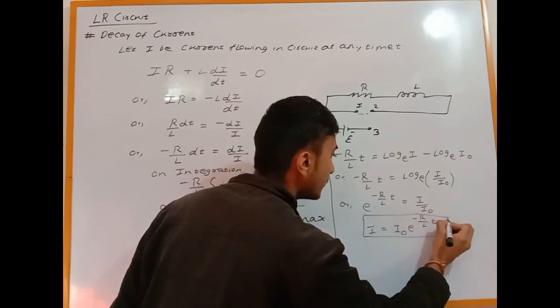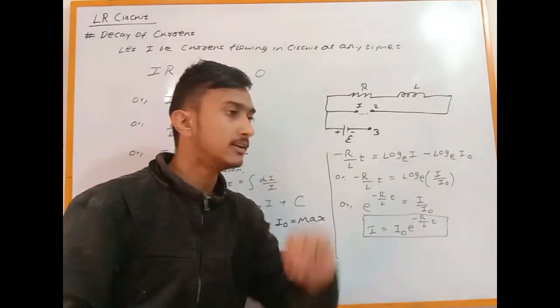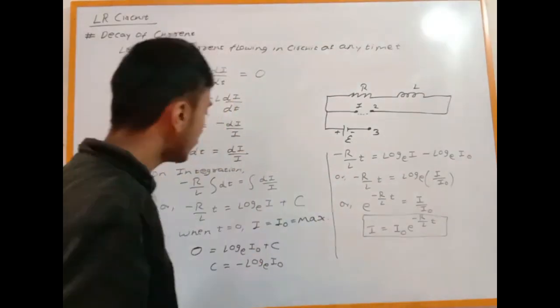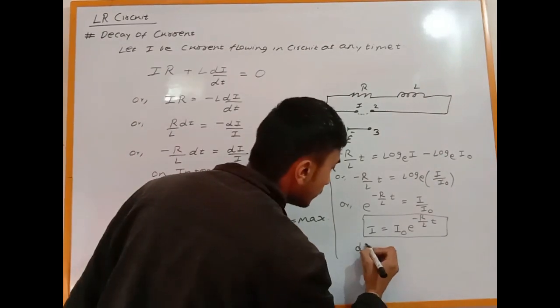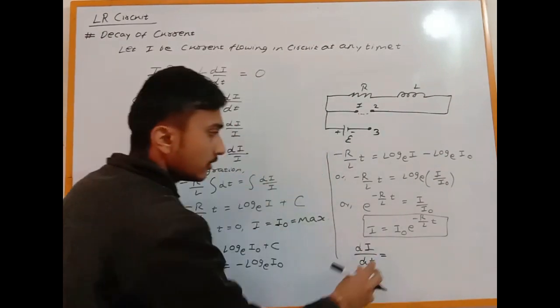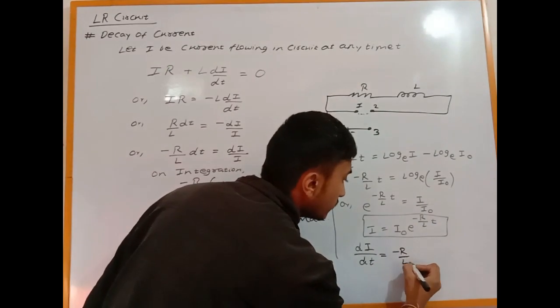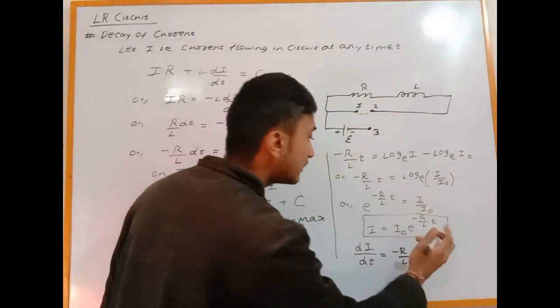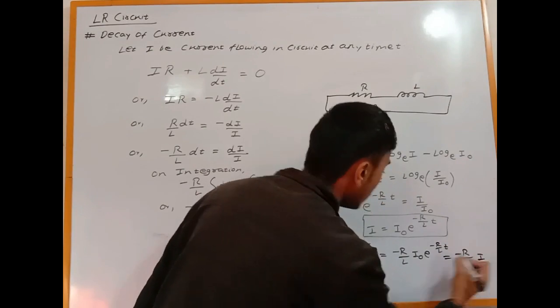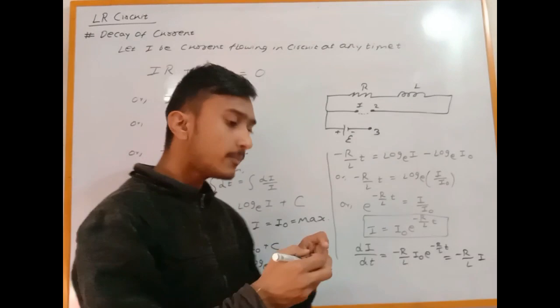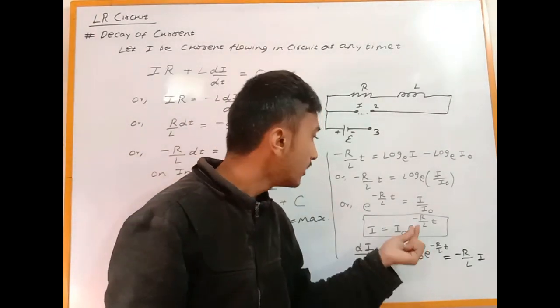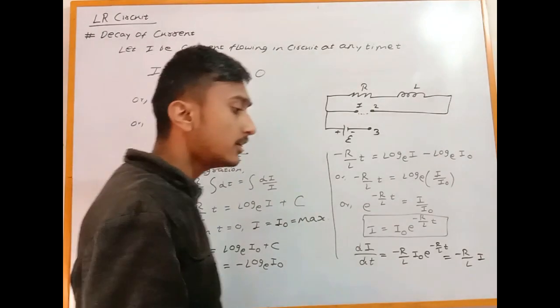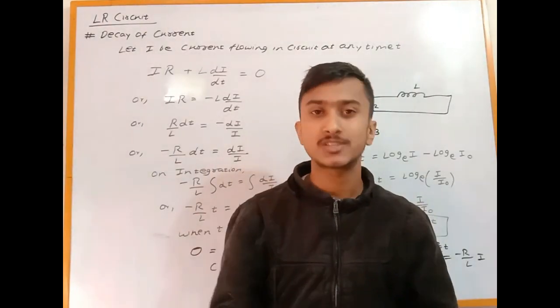This is the required expression for current at any instant T. If you want the rate of change with respect to time, di/dt equals -(R/L)I₀·e^(-Rt/L). The minus (R/L) factor shows the exponential decay. This expression directly gives the decay of current in an LR circuit. I hope you understand this video and thank you for watching.